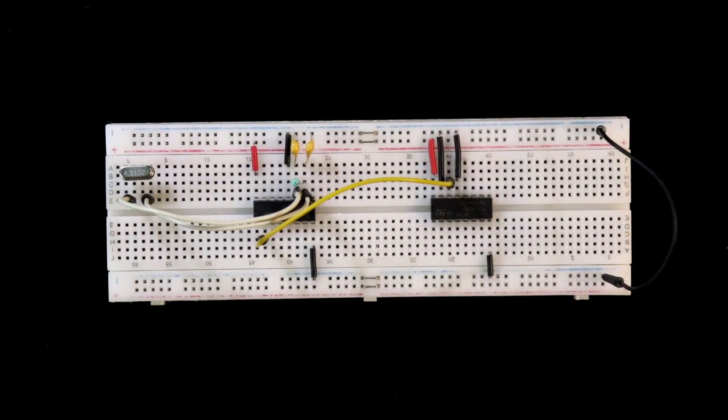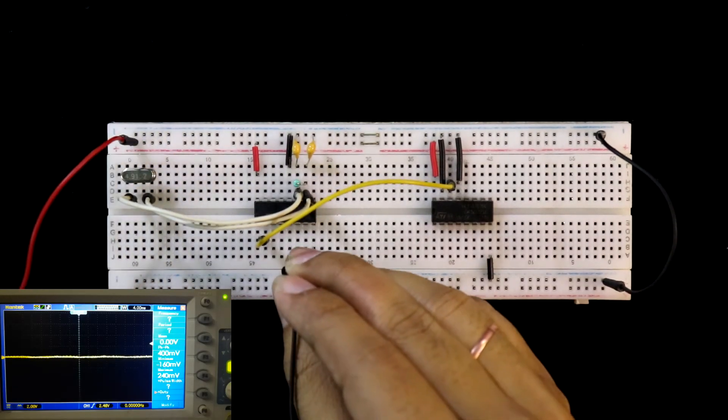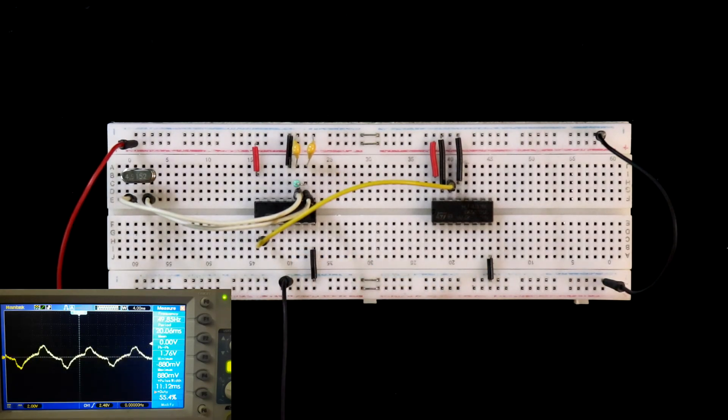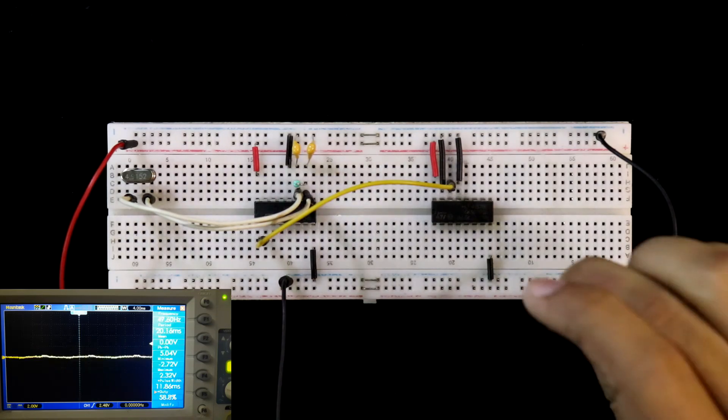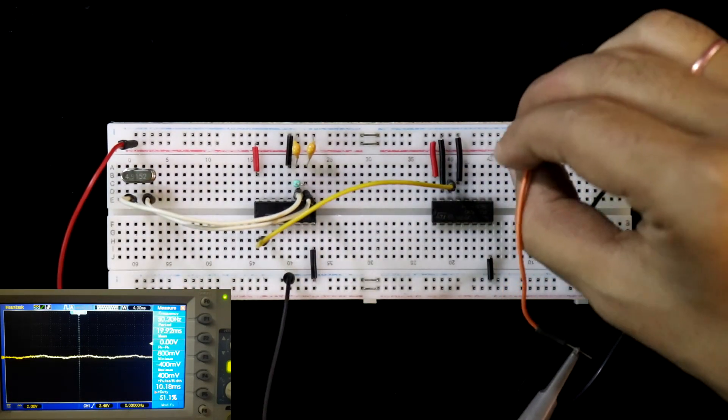Now we can take the output from pin number 12. Connecting the 5 volt power supply. Here I am connecting the oscilloscope, ground is connected and channel 1 is connected to pin number 12 of this IC.